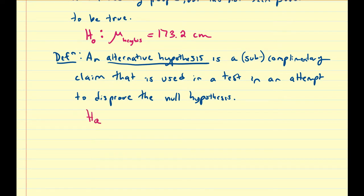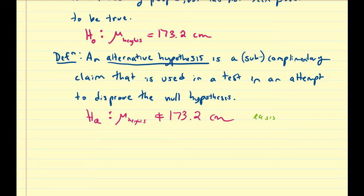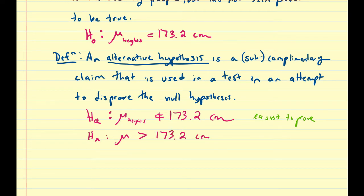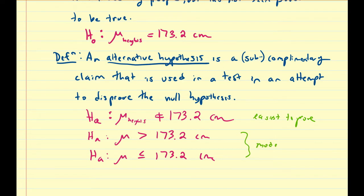The most common alternative hypothesis, abbreviated as H subscript a for alternative, is that the mean height is not equal to 173.2 centimeters. This is typically the easiest to prove. Some alternatives are a little harder to prove but could actually be the truth. For example, you could say the mean is going to be bigger than 173.2 centimeters, or that the mean is less than or equal to 173.2 centimeters. These would be on about the same level of proving difficulty — moderate.